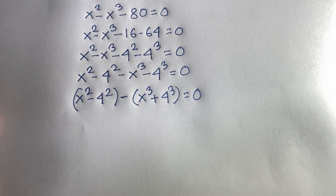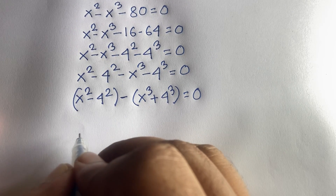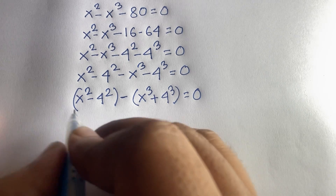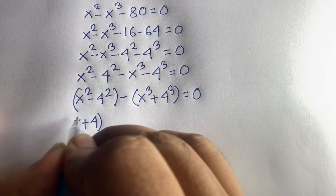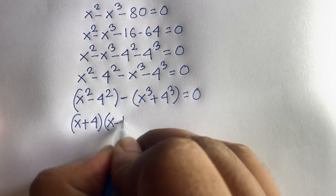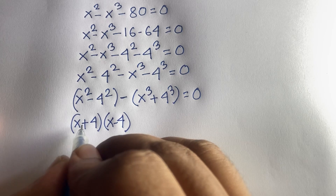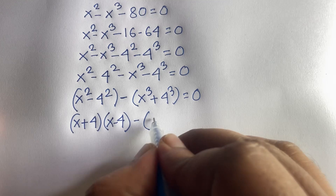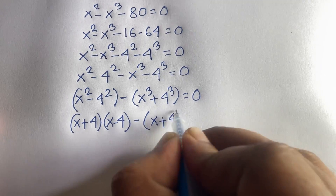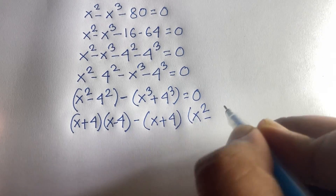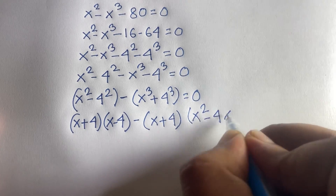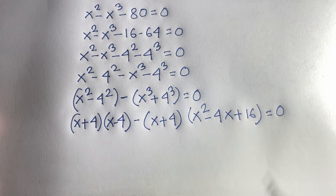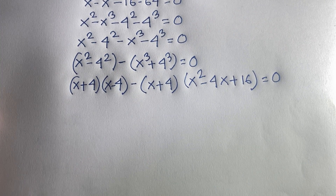We know that a squared minus b squared equals (a+b)(a−b), so x squared minus 4 squared becomes (x+4)(x−4). And we know that a cubed plus b cubed equals (a+b)(a squared minus ab plus b squared), so x cubed plus 4 cubed expands with 4 squared equal to 16.